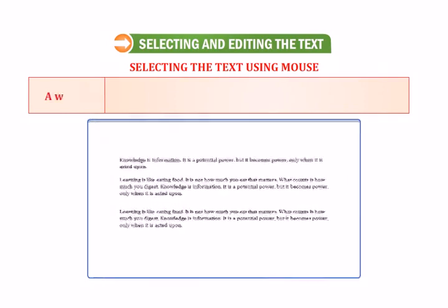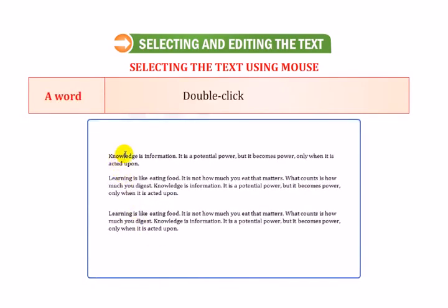Now let us understand how to select the text using mouse. To select a word, the method is to double-click on the word.